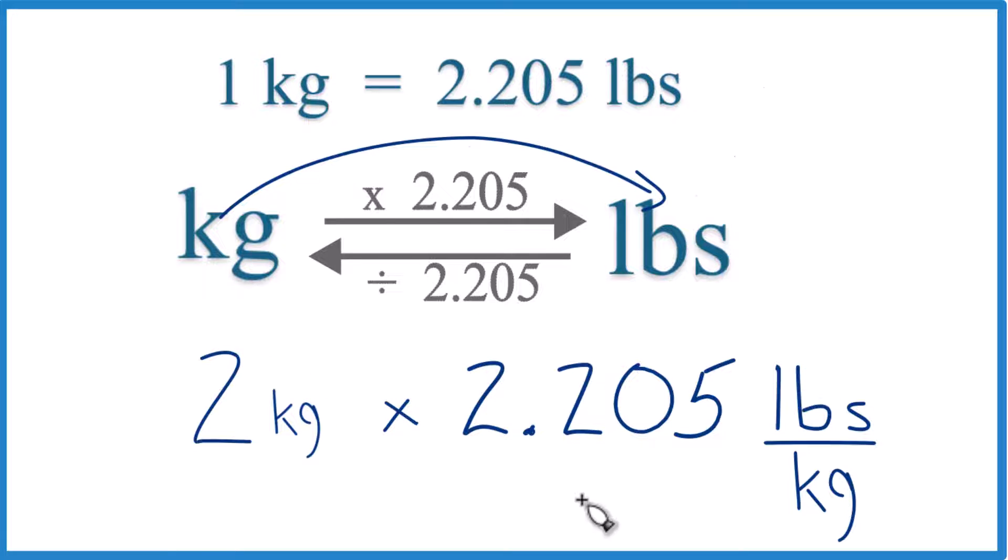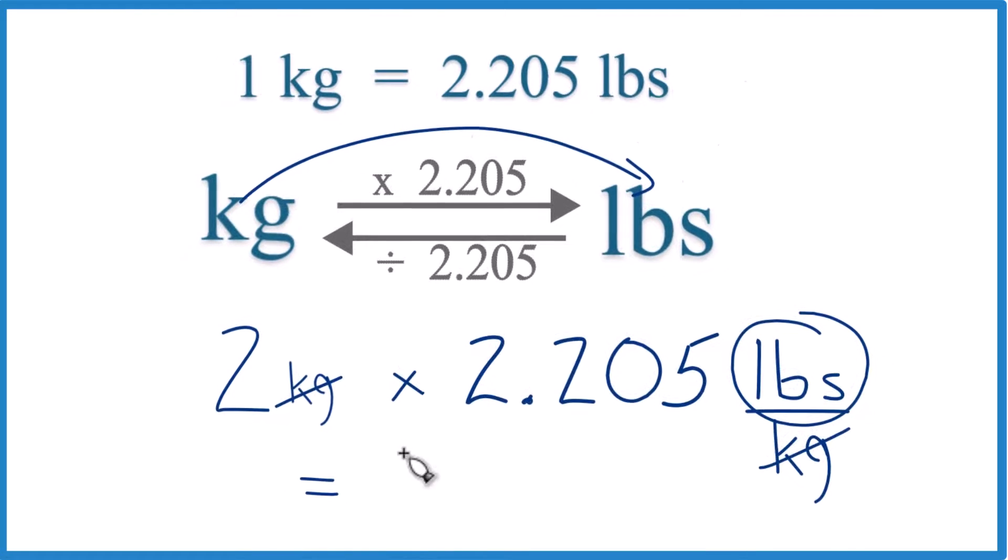So now we multiply the top, we get kilograms here on the top, kilograms on the bottom, they're gone, left with pounds. So 2 times 2.205, that equals 4.41,